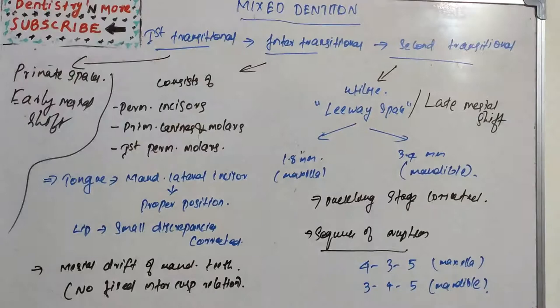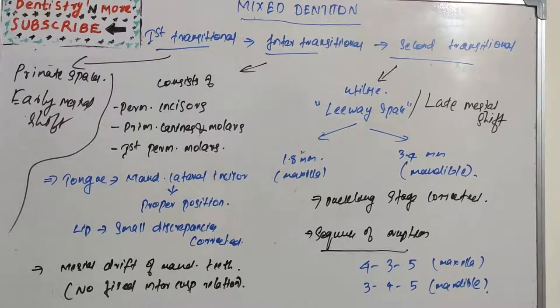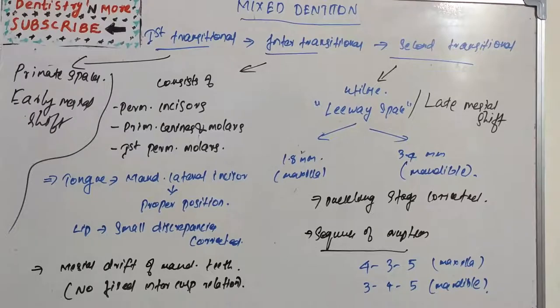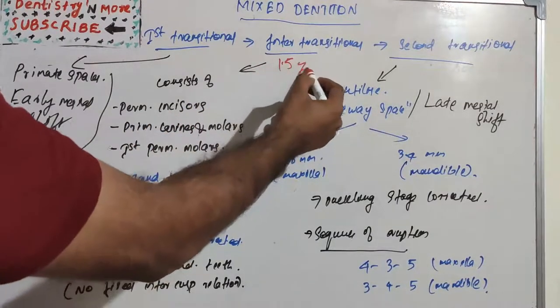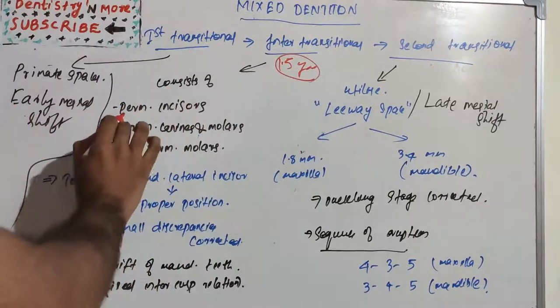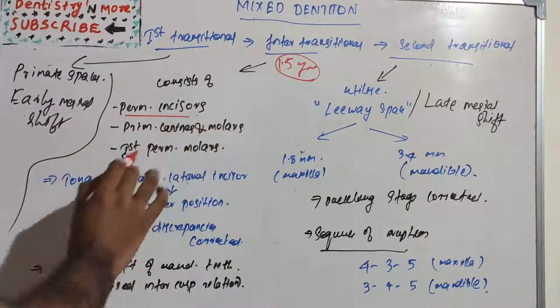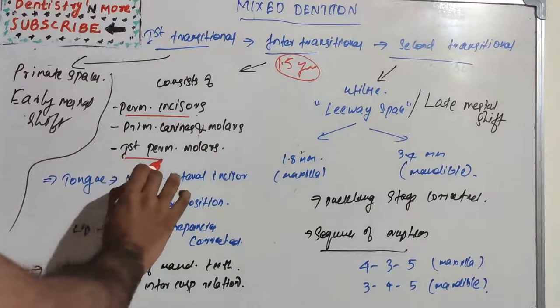So what is happening in the inter-transitional phase? After the first transitional phase changes, the eruption of maxillary incisors occurs, which is incisor liability. The inter-transitional phase is basically a stable phase and it lasts for around 1.5 years.